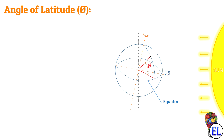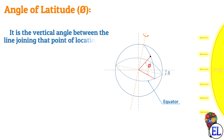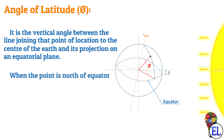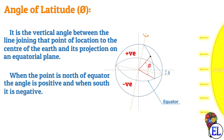We can define the angle of latitude as the angle between the line joining the point of location to the center of the earth and its projection on the equatorial plane. When the point is north of the equator the angle phi is positive, and when south it is negative. You can see the same on the globe here.